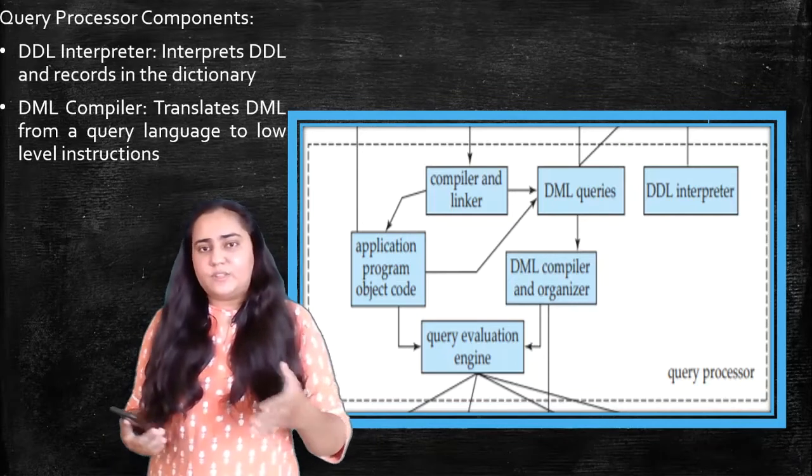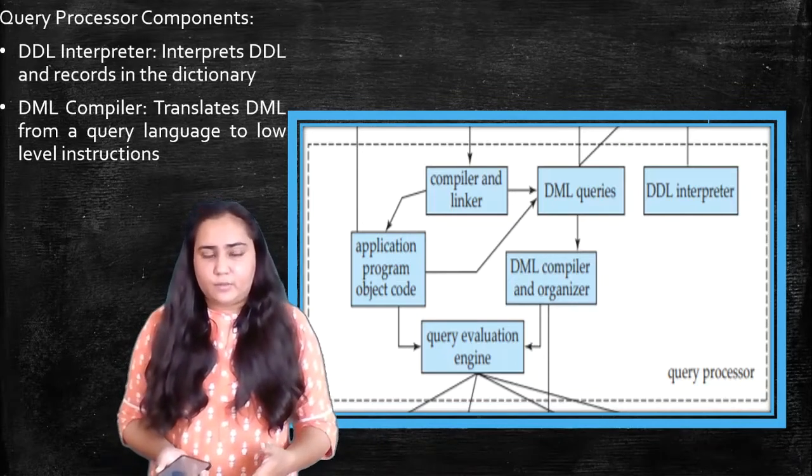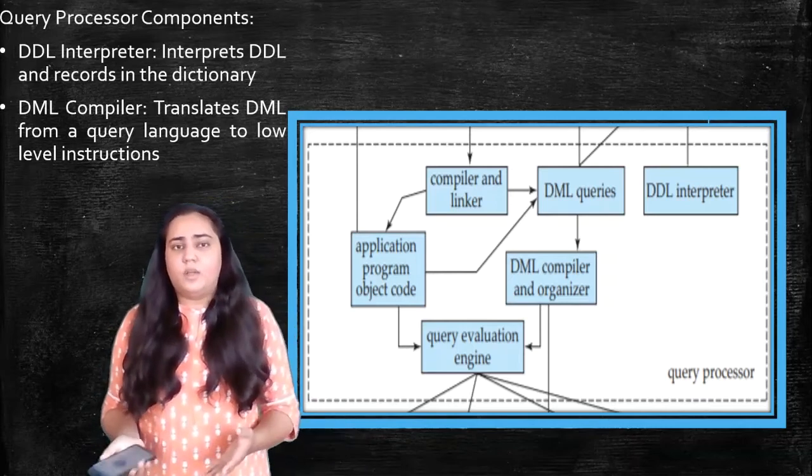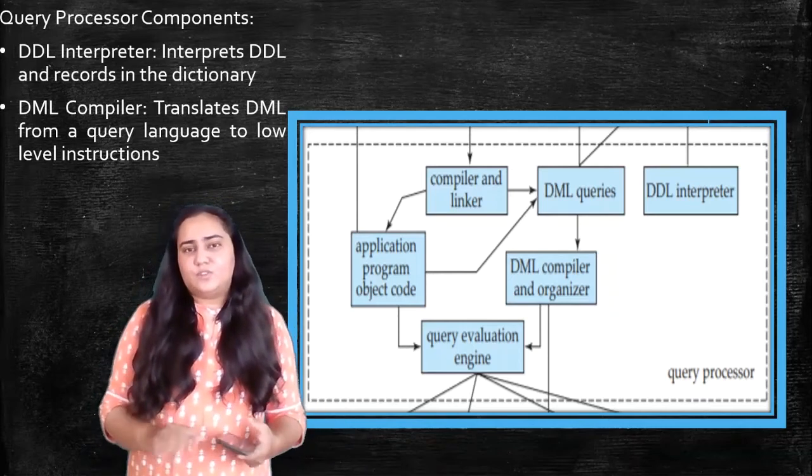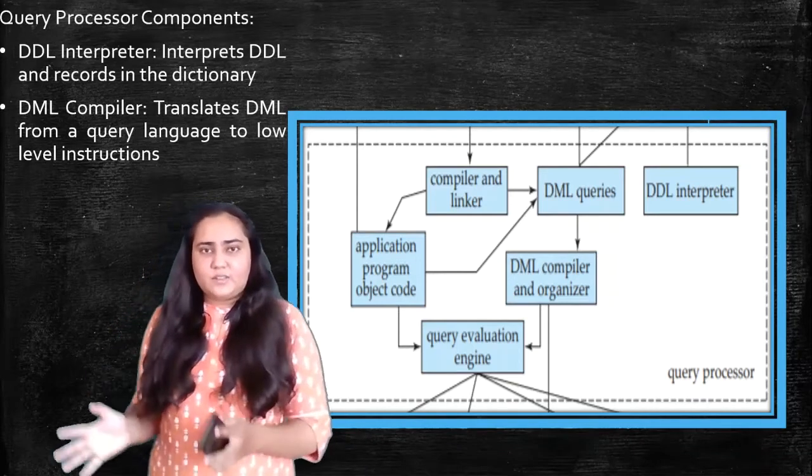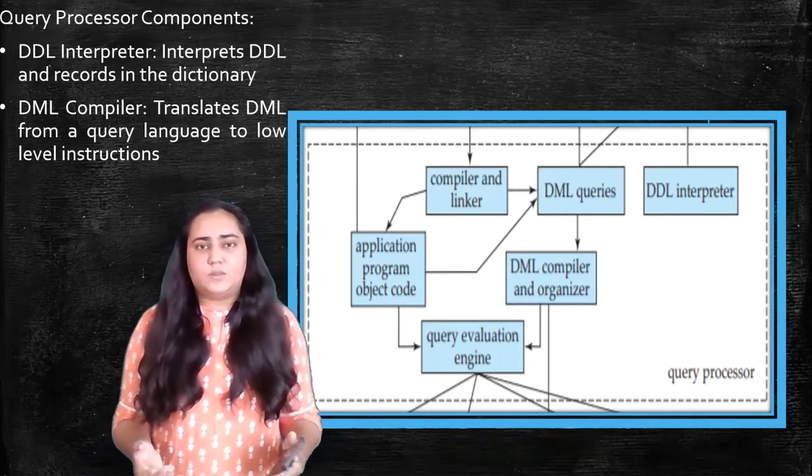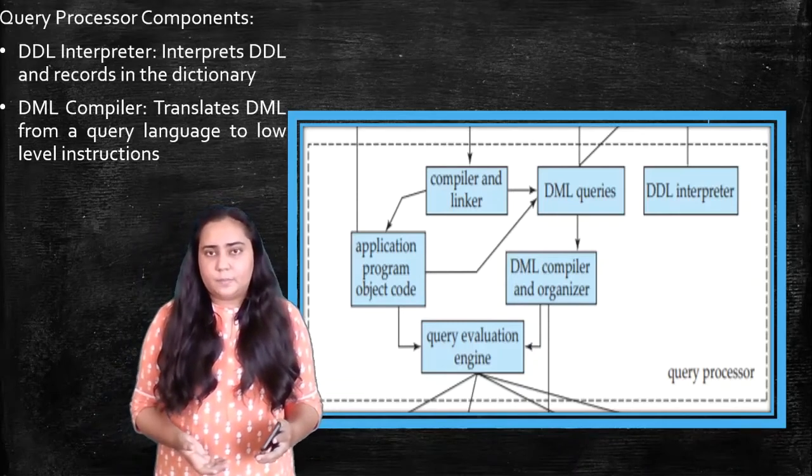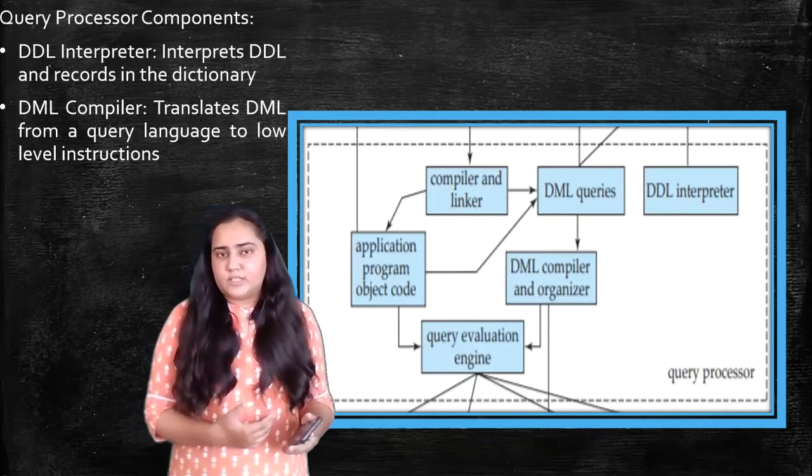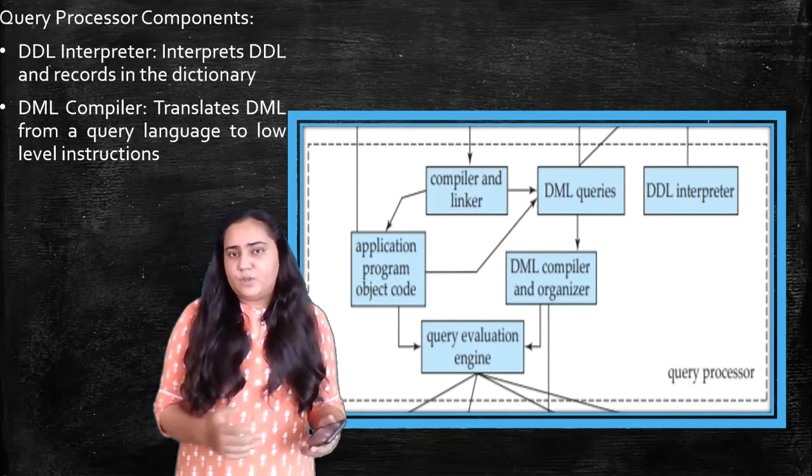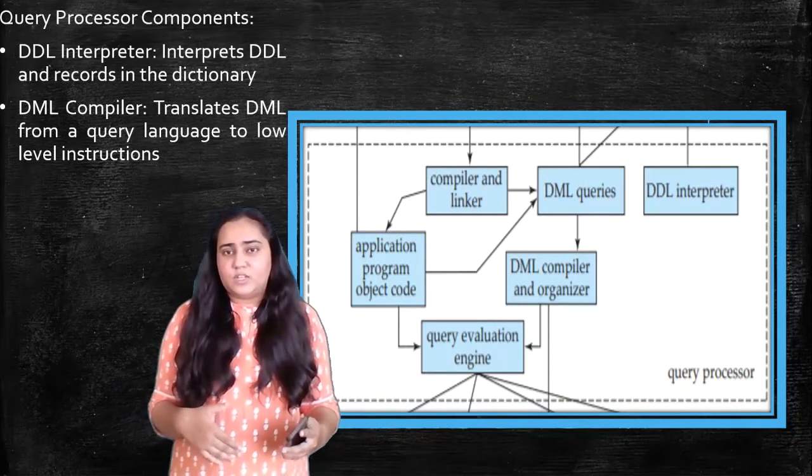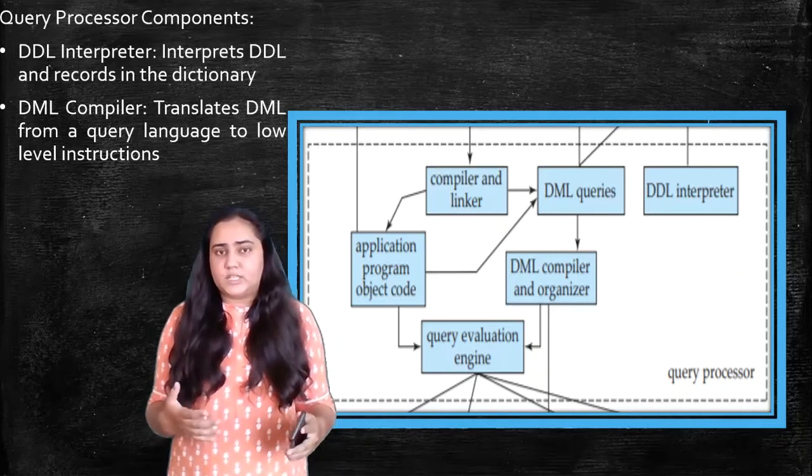So this code is then stored in the obj file, which means your code, your program is translated once and for all. Now every time you do not need to translate it. It is present in that file and all you need to do is run it. So once you've compiled everything you don't need to translate it. But interpreter doesn't work in that way. Even though you interpreted the code once, the next time you want to run it, you have to interpret or translate it again.